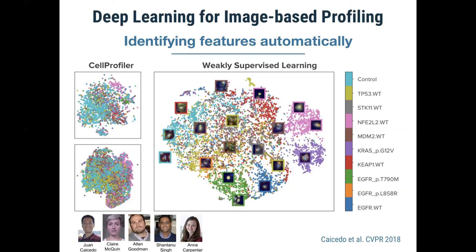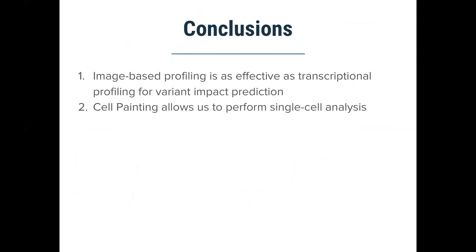The conclusions of this work are that image-based profiling is as effective as transcriptional profiling for variant impact prediction. Imaging is cheaper and sometimes faster to prepare, and scales to different infrastructures from very small labs to pharmaceutical-scale labs. Cell painting also allows single-cell analysis, which provides information about cellular heterogeneity and other potential insights.